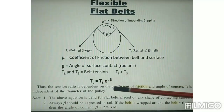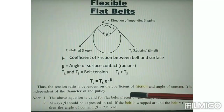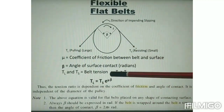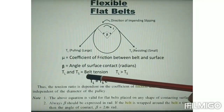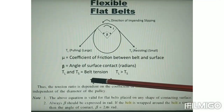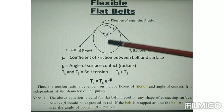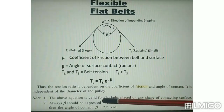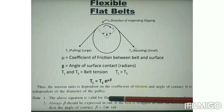From this relation, it is clear that the tension ratio depends only on the coefficient of friction and the angle of contact. It is independent of the diameter of the pulley, since no diameter term appears in the equation. The above equation is valid only for flat belts.